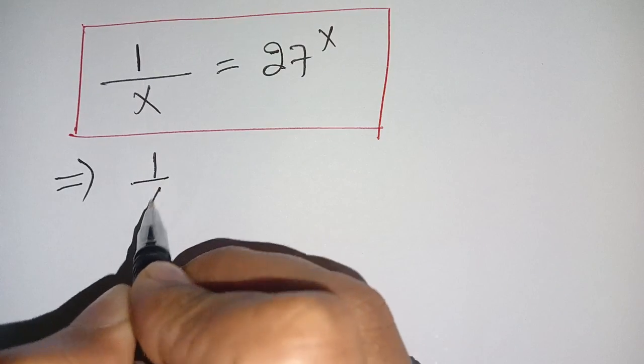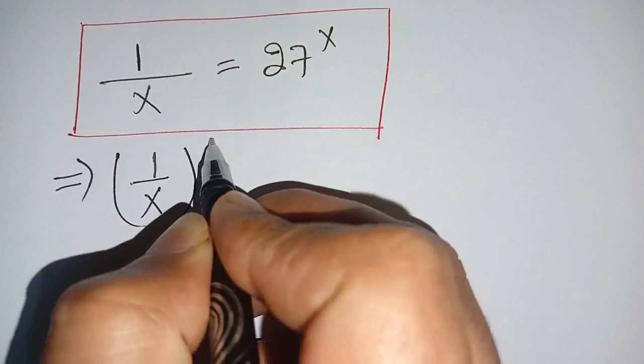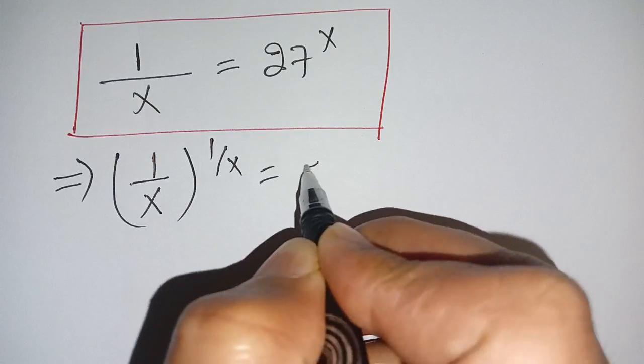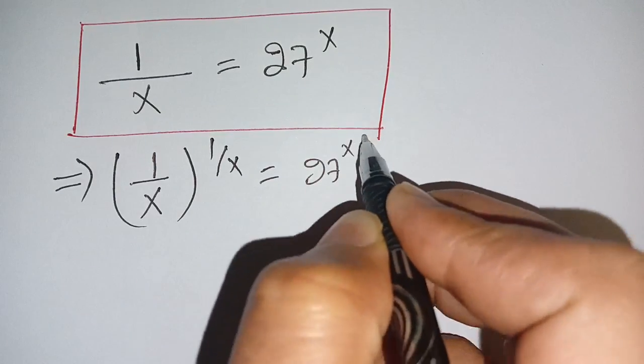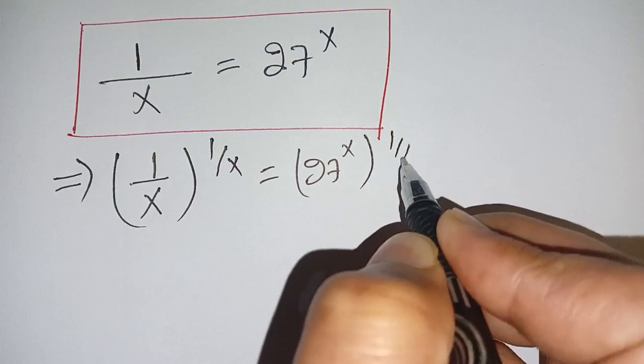We can write this as 1 divided by x whole power 1 divided by x is equal to 27 power x whole power 1 divided by x.